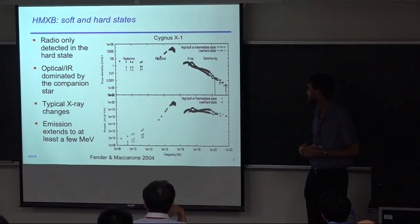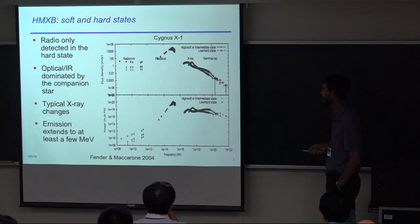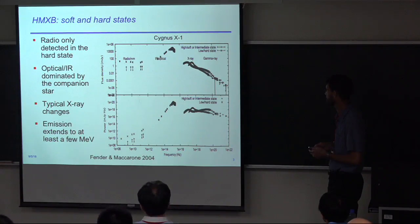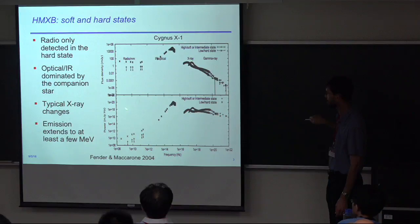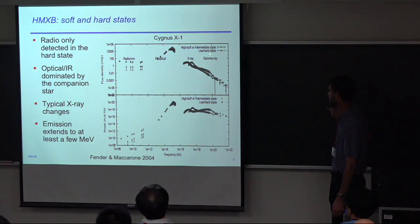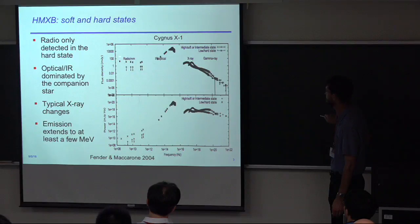This is the Cygnus X-1 spectral energy distribution running from radio down here to gamma rays up here. There are two panels — the bottom is just the top panel multiplied by the frequency, so don't be confused by that. Both panels show the hard state with X's and the soft state with pluses.